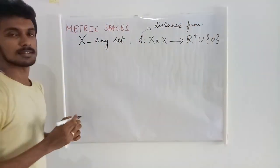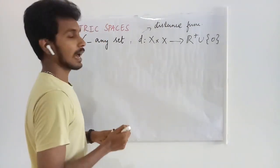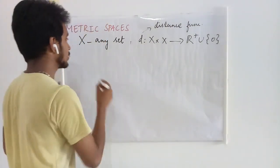This mapping is called a distance function or metric, and it has to satisfy certain conditions.